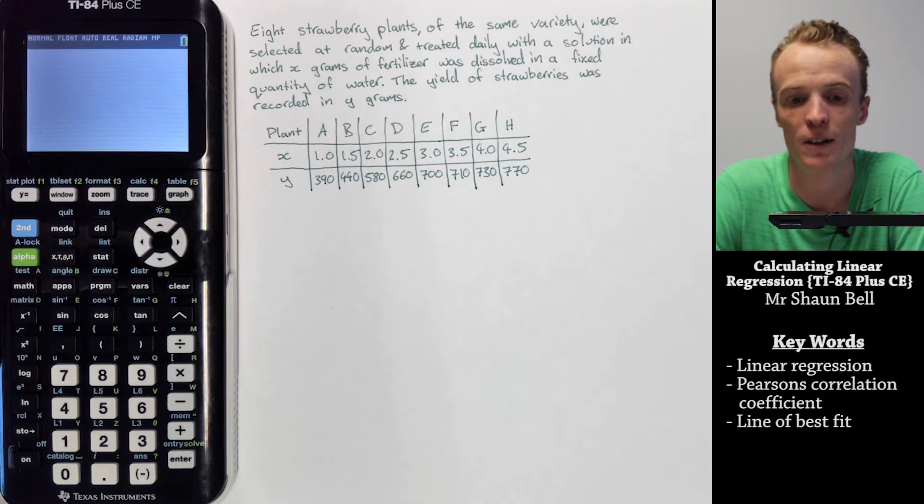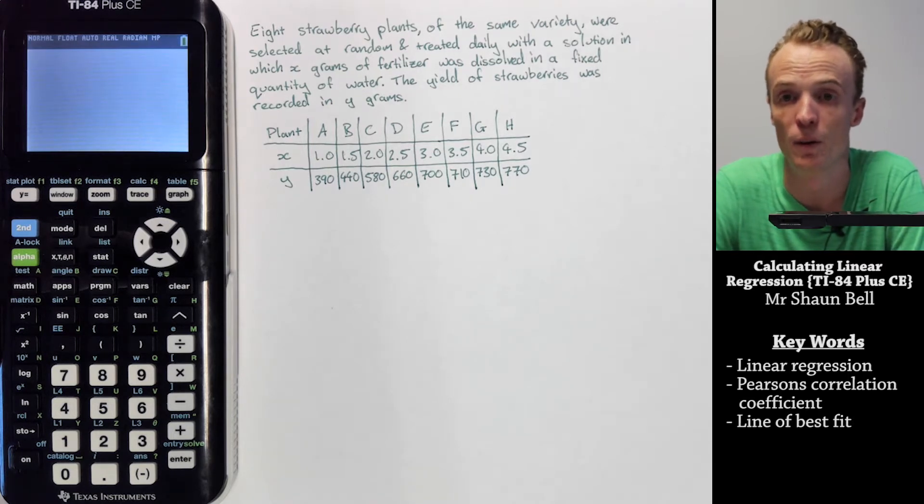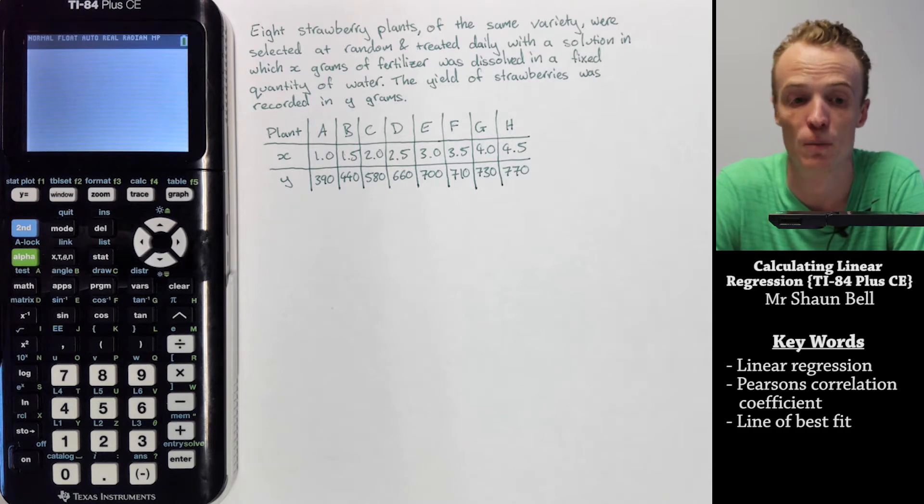This is a tutorial on how to enter lists into a TI-84 Plus CE calculator, then graph those lists in a scatter plot, and find the equation of a linear regression model.